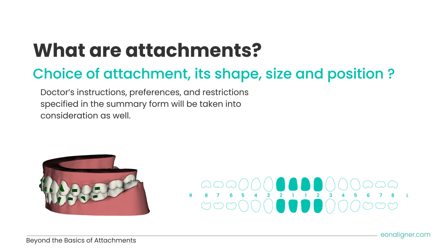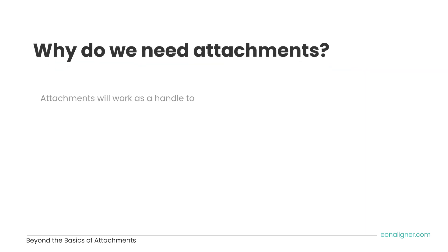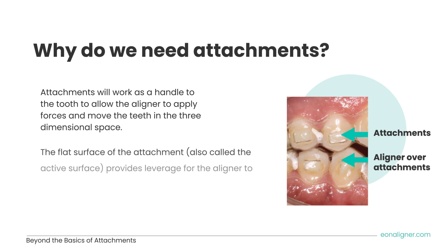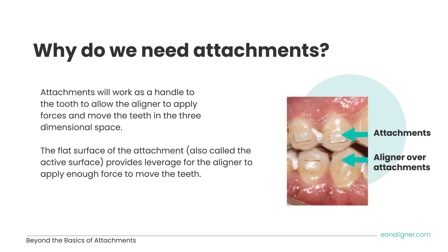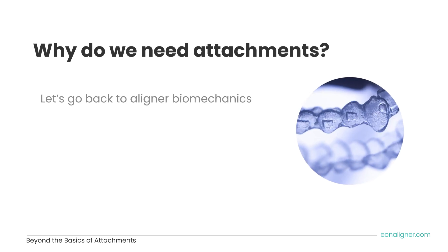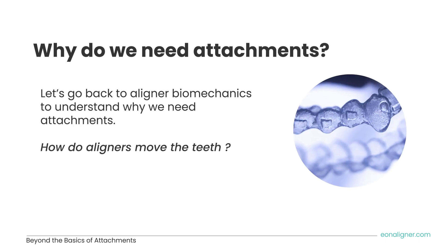If there are no restrictions for attachment placement, it is recommended to keep and follow EON's recommendation, as those are designed individually for each case to achieve best predictability. Moving forward, let's understand why we need attachments. Attachments work as a handle to the tooth, allowing the aligner to apply forces and move the teeth in three-dimensional space. The flat surface of the attachment, also called the active surface, provides leverage for the aligner to apply enough force.